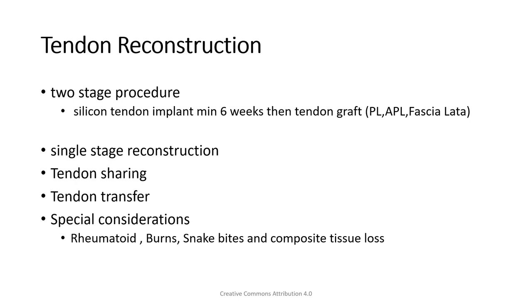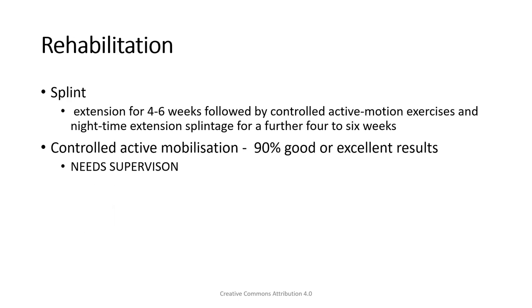Palmaris longus is commonly used. For short grafts, I am quite happy to use abductor pollicis longus. We can also use fascia lata and make them into strips to reconstruct. We will look at some of these examples in the various pathologies.